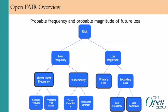FAIR defines risk as the probable frequency and probable magnitude of future loss. As you see in the diagram, the factors shown decompose risk into loss frequency, loss magnitude, and further down the tree. The sections highlighted are the level at which we're going to do the analysis. When you do a FAIR analysis, one of the first things the analyst needs to do is decide how deep down the tree you need to go to really think through your problem.